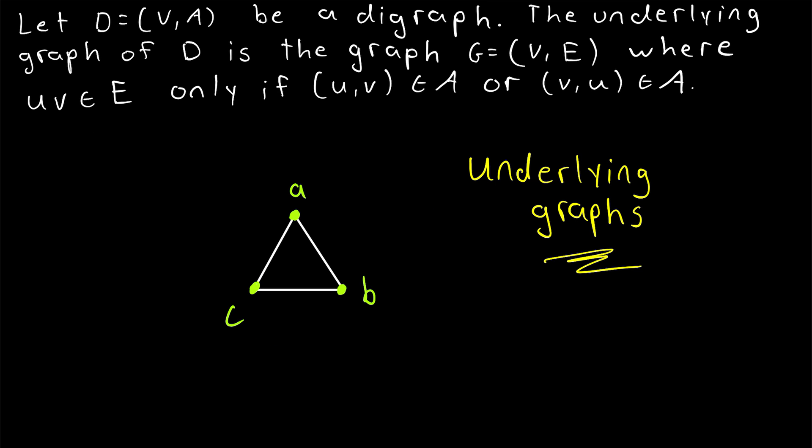Now, if you wanted to modify this definition of underlying graph so that the underlying graph could be a multigraph, then you'd have to say something like, if exactly one of uv or vu is an arc of the directed graph, then uv should be an edge in the underlying graph with multiplicity 1. But if uv and vu are both arcs of the directed graph, then their end vertices in the underlying graph should be joined by an edge with multiplicity 2, which really means they should be joined by two identical edges. And again, if you want to hear more about multiplicity of edges in multigraphs, check the description for a link to my lesson on parallel edges.